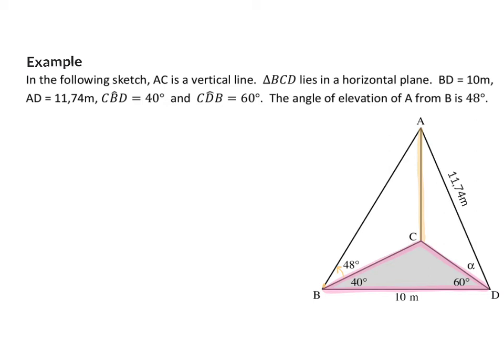The first part of information says that AC is vertical and triangle BCD horizontal, and that means that angle ACB and ACD are both 90 degrees.